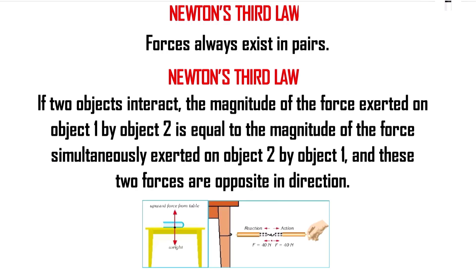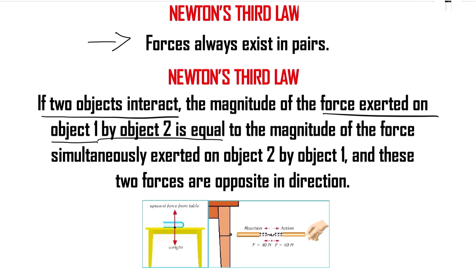Now we will talk about Newton's third law of motion. The first statement says forces always exist in pairs — meaning we always have a double force. If two objects interact with each other, the force exerted on the first object by the second equals the magnitude of the force simultaneously exerted on the second object by the first, and these forces are in opposite directions.